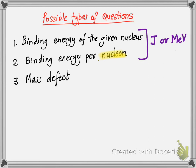You can also be asked to calculate mass defect, or to calculate binding energy in joules or mega electron volts. Mass has three units we learned in this chapter: the unified mass unit (u), kilograms, and MeV over c squared.